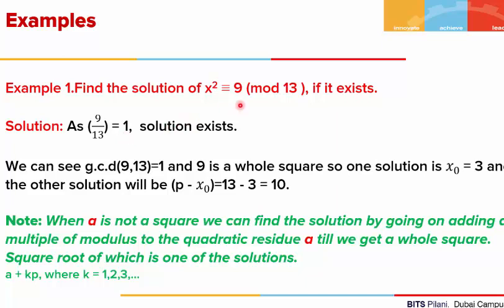The GCD of 9 and 13 is 1, and 9 is a perfect square — it is 3 squared. So X squared is congruent to 3 squared mod 13. Hence one solution is 3, and the other solution will be 13 minus 3, which equals 10. This congruence has two solutions: 3 and 10.